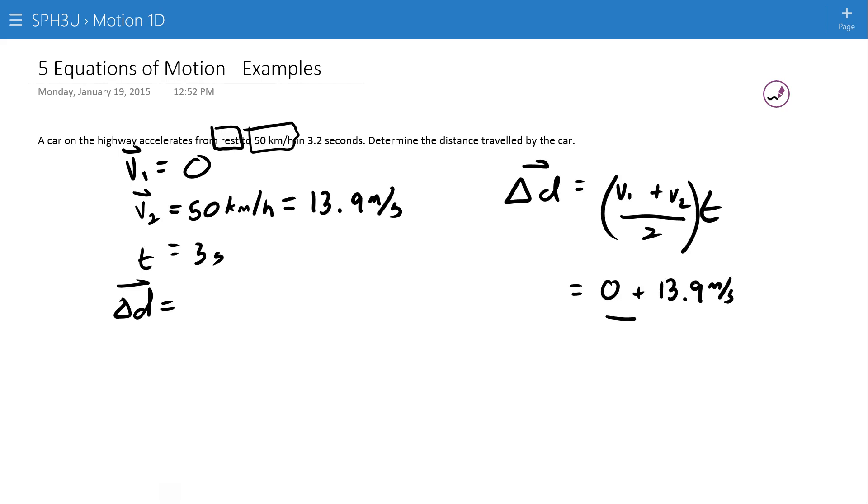So zero plus 13.9 divided by two times my time of three seconds, and here I just have calculator work. Works out to 20.8 meters. So a car going from zero to 50 in 3.2 seconds will travel a distance of 20.8 meters.